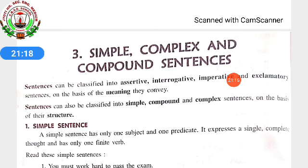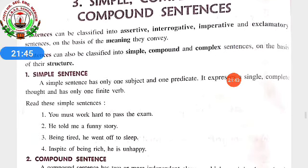Now let's read from the book. Chapter Three: Simple, Complex and Compound Sentences. Sentences can be classified into Assertive or Declarative, Interrogative, Imperative and Exclamatory sentences on the basis of the meaning they convey. Sentences can also be classified into Simple, Compound and Complex sentences on the basis of their structure. Simple sentence: a simple sentence has only one subject and one predicate. It expresses a single complete thought and has only one finite verb.